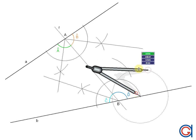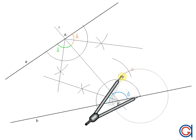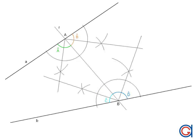Once we have the four angular bisectors, you notice that the first two angular bisectors intersect, and when we prolongate them, they meet at two new points which we will call points M and N.